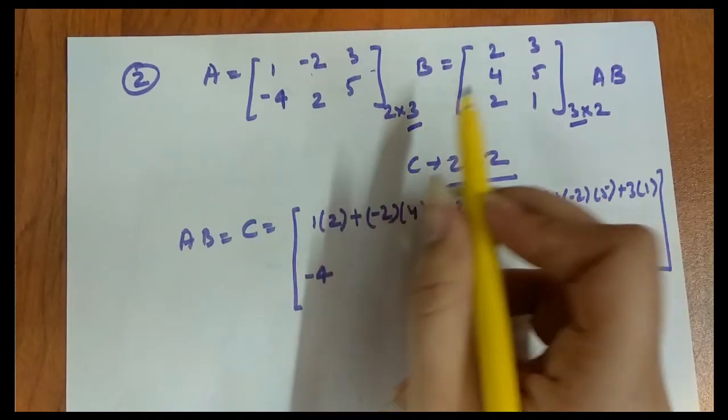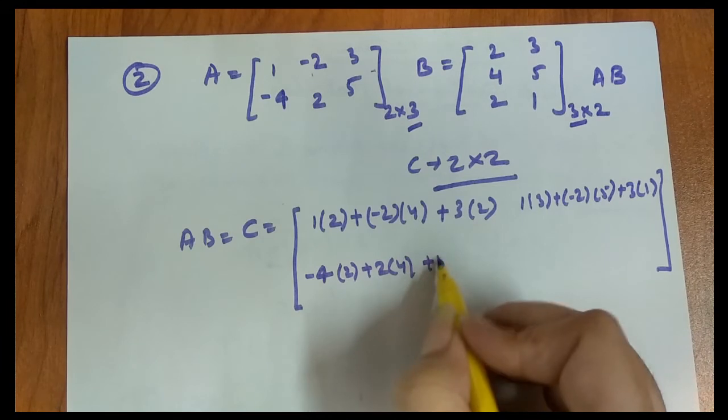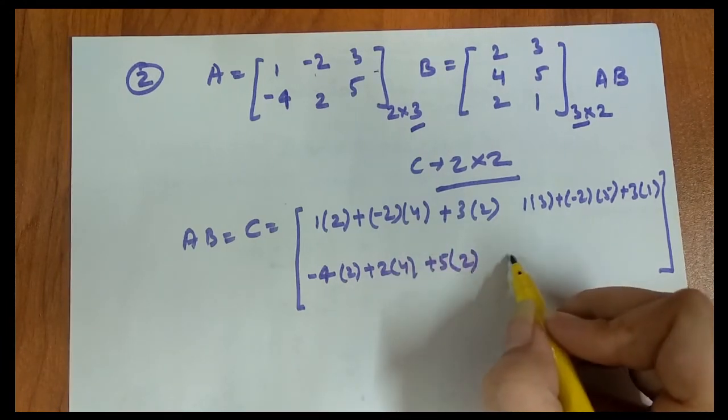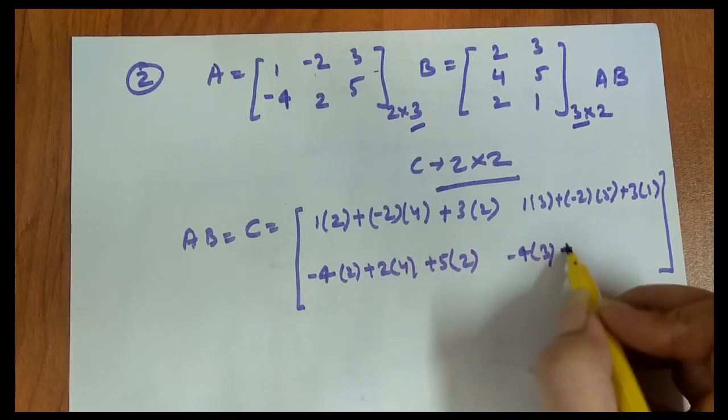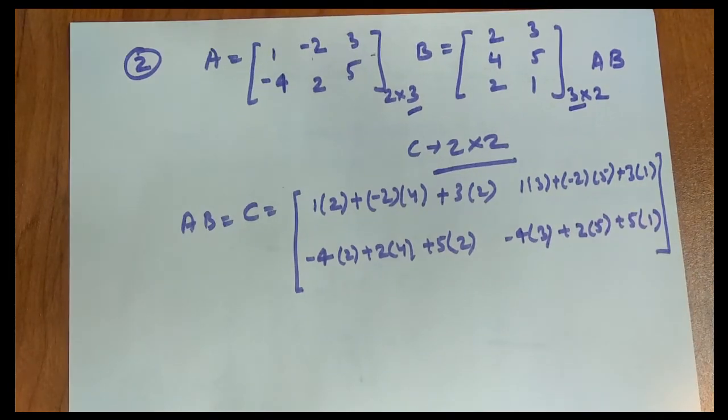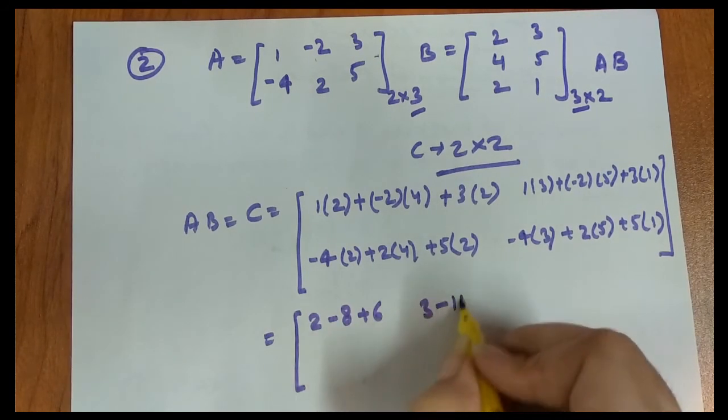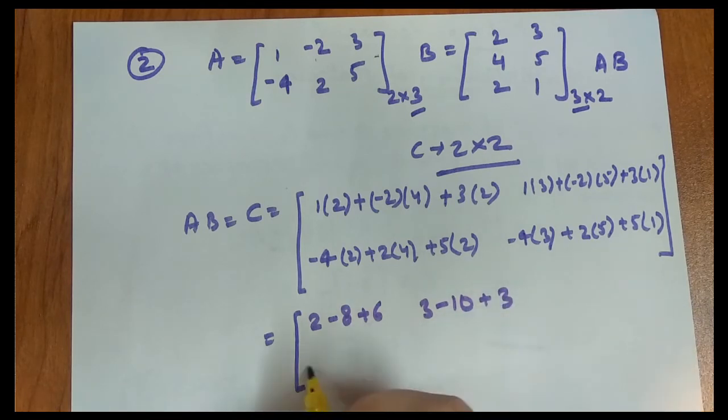Similarly, -4 times 3 plus 2 times 5 plus 5 times 1. Now let's calculate. It's 2 minus 8 plus 6, 3 minus 10 plus 3, -8 plus 8 plus 10, -12 plus 10 plus 5.